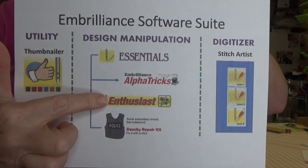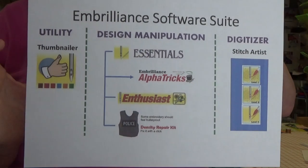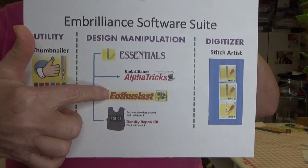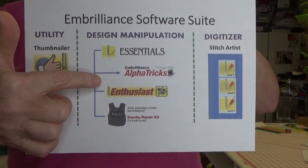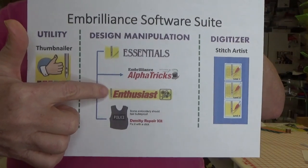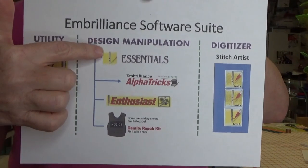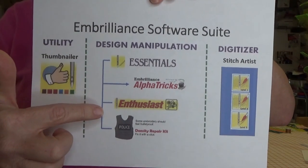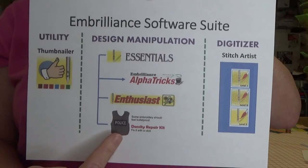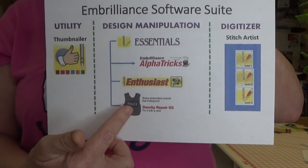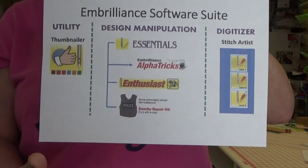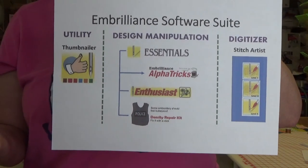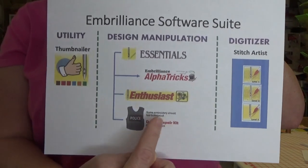Embrilliance Enthusiast has a precise positioning system that I really like. You don't have to have Essentials to run Enthusiast, but you won't be able to resize or merge anything in Enthusiast without Essentials. So they run independently of each other but also integrate with each other. The Density Repair Kit would be something like if you wanted to remove a bunch of stitches to make a design less dense, maybe put a piece of mylar down and have some shiny stuff show through your design.